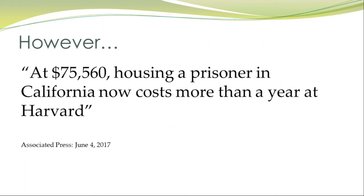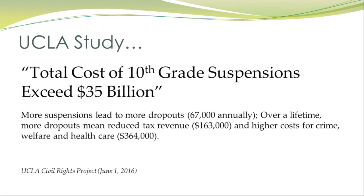In addition, the Associated Press recently reported that the cost of housing a prisoner in California now exceeds the cost of a student attending Harvard for a year. And for the first time, there are costs associated with suspension. The UCLA Civil Rights Project published a report suggesting suspensions are costing us $35 billion a year — because more suspensions lead to dropouts, about 67,000 students annually tracked from suspension to dropout, resulting in lost tax revenue as productive citizens, as well as social costs of welfare, healthcare, and criminal justice.